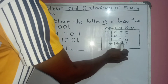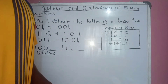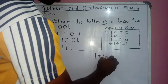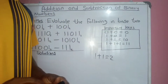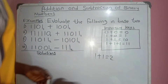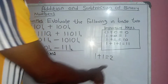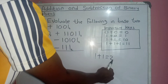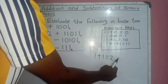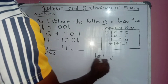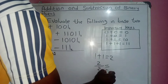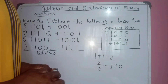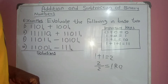1 plus 1 equals 10 in binary — that is, 1 and 0, not ten in the usual sense. Ordinarily 1 plus 1 should be 2, but since we can't have 2 in base 2, we divide by 2: 2 divided by 2 gives 1 remainder 0, making it 1, 0. Some students call it 10 to simplify their calculations.